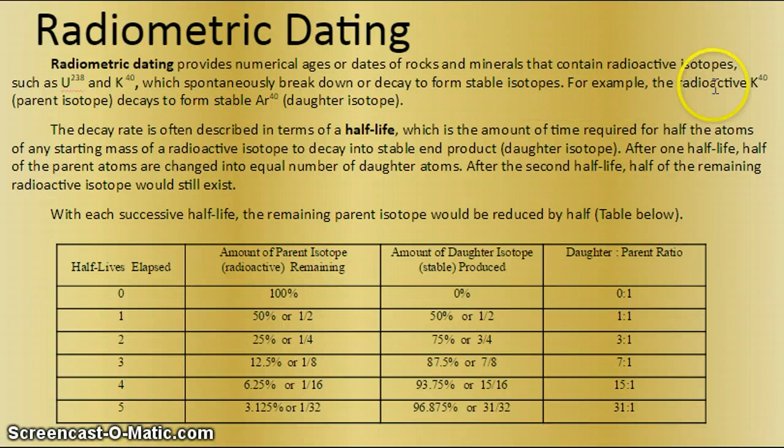For example, the radioactive potassium-40, the parent isotope, decays to form a stable form of argon-40, and this is called a daughter isotope. You need to make sure you understand that the parent is the radioactive material, and the daughter is the stable form.